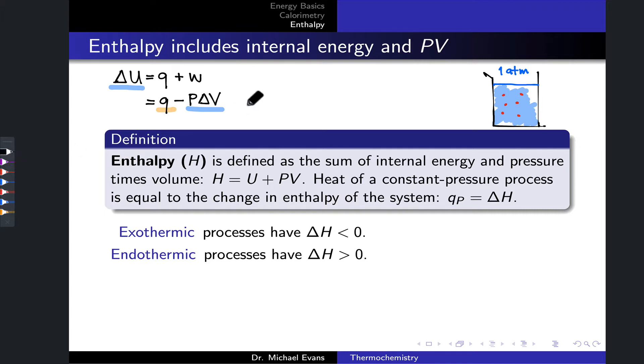So we can collect all of the state function terms or the changes in state functions on one side. Delta U plus P delta V, and the only remaining path dependent function Q on the right hand side.